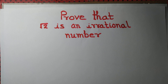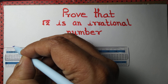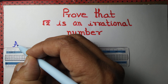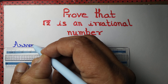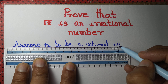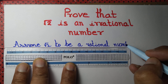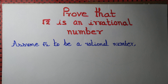We want to prove that √2 is an irrational number. Suppose, if possible, we assume that √2 is a rational number. Maybe it is rational, maybe it's not — we don't know — but let us assume it to be a rational number.